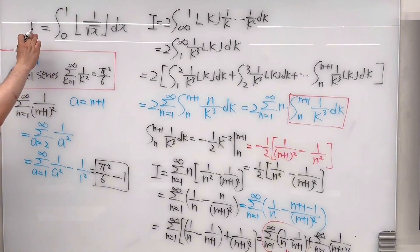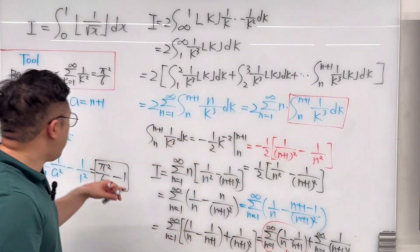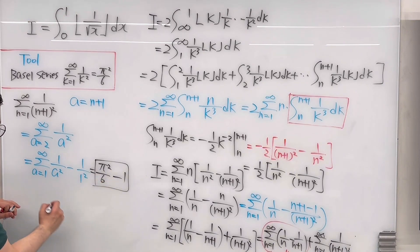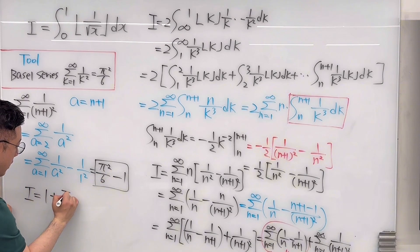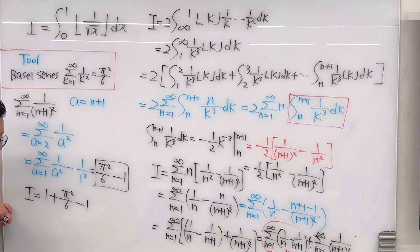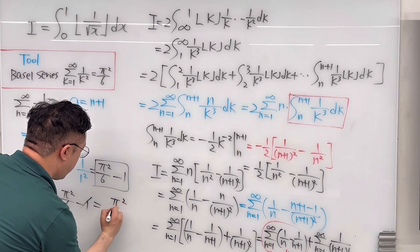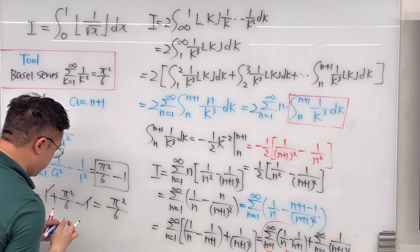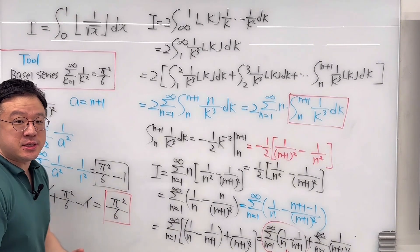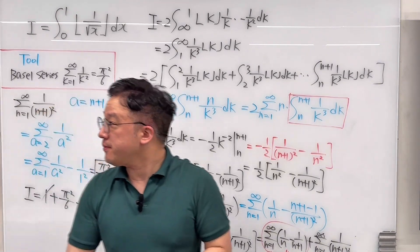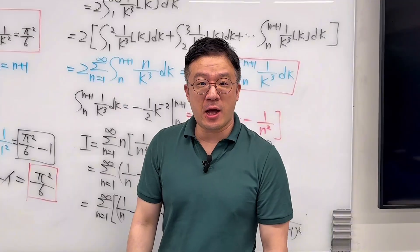So the integral I equals 1 plus pi squared over 6 minus 1. The 1s cancel, and we're left with pi squared over 6. So the answer for this question is pi squared over 6. It's a pretty interesting viewer-suggested integral — how amazing.